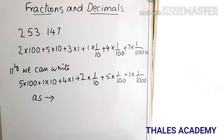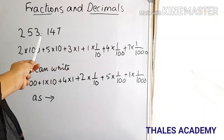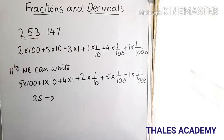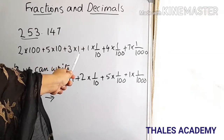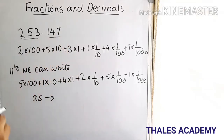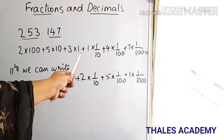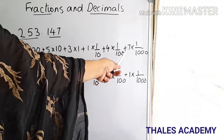Look at the number 253.147. We can expand it as 2 into 100 plus 5 into 10 plus 3 into 1. The portion after the decimal point on the right side can be written as 1 into 1/10 plus 4 into 1/100 plus 7 into 1/1000.